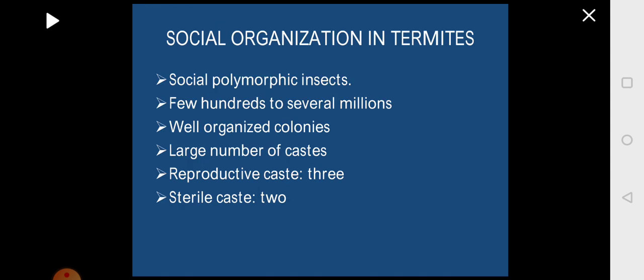Termites, which are commonly called as the white ants, are socially polymorphic insects. In each colony there may be few hundreds to several millions of members present. Termites include well-organized colonies and they have more number of castes compared to the honeybee, which we did in the previous video.